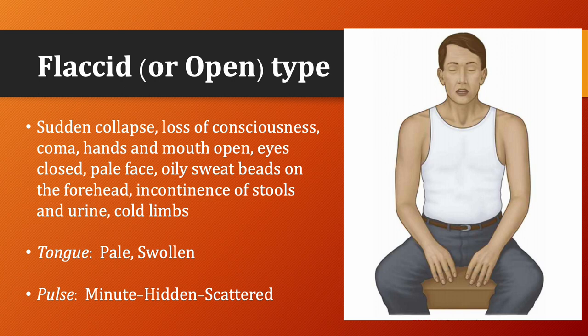Flaccid or open type corresponds to collapse of yang. Clinical manifestations: sudden collapse, loss of consciousness, coma, hands and mouth open, eyes closed, pale face, oily sweat beads on the forehead, incontinence of stools and urine, and cold limbs. Tongue is pale and swollen. Pulse is minute, hidden, and scattered.